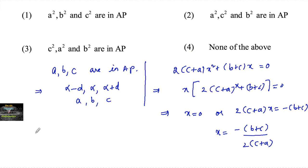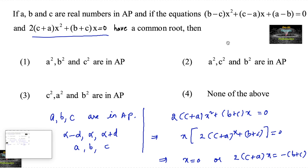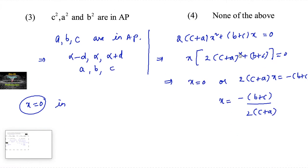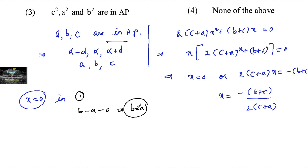Suppose x = 0. Substituting in the first equation gives (b minus c)(0) + (c minus a)(0) + (a minus b) = 0, which implies a minus b = 0, so b = a. But this is not possible since a, b, c are in AP (they would all be equal, giving a trivial case).